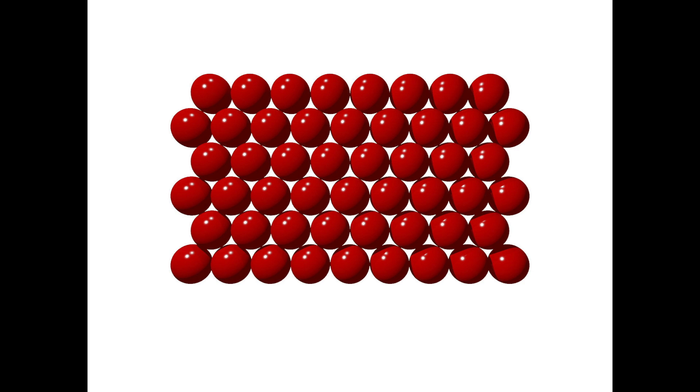We'll start with our monolayer and put one sphere of the second layer on top. Let's highlight the tetrahedron we have created. We can see that we are looking down at one of the four corners of the tetrahedron.